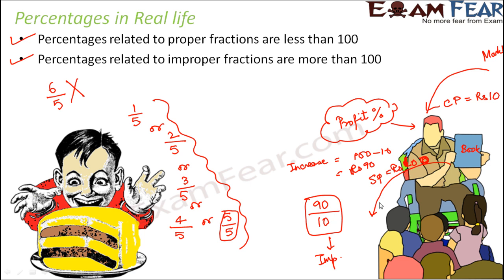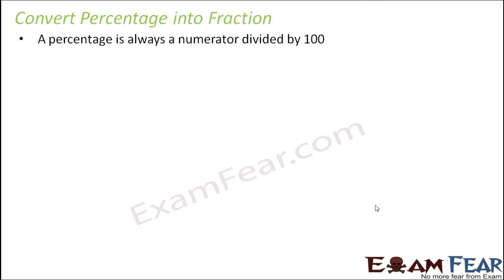So when you convert it into percentage you are going to get a value which is greater than 100 percent. So these are two examples from our real life. In one example we saw that we always end up getting proper fractions and therefore less than 100 percent. In the other example we can get improper fractions and therefore more than 100 percent.